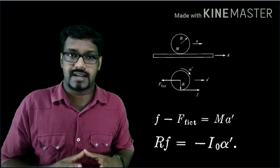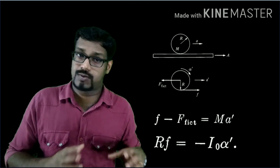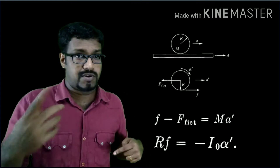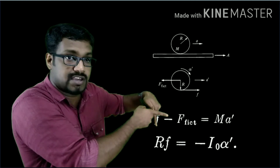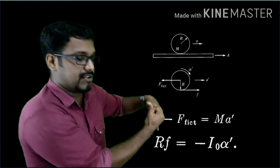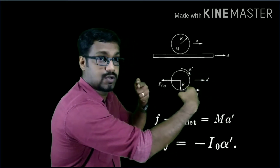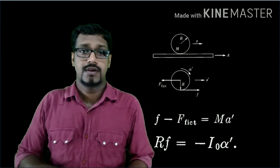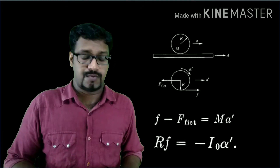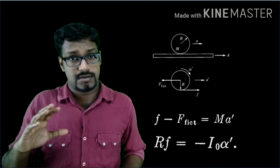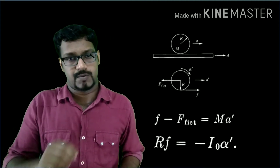The minus sign arises because the angular acceleration and torque are in opposite directions. The torque direction from R cross F points outward, while the angular acceleration points inward due to the direction of rotation — that's why the negative sign appears. So we have RF equals minus I₀ alpha prime, where I₀ is the moment of inertia of the cylinder. Therefore F equals minus I₀ alpha prime divided by R.